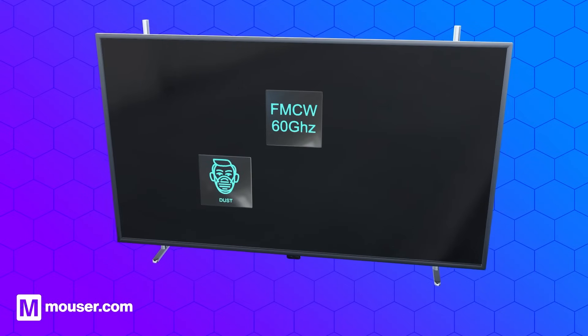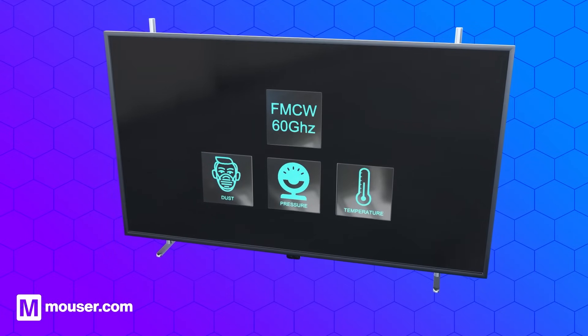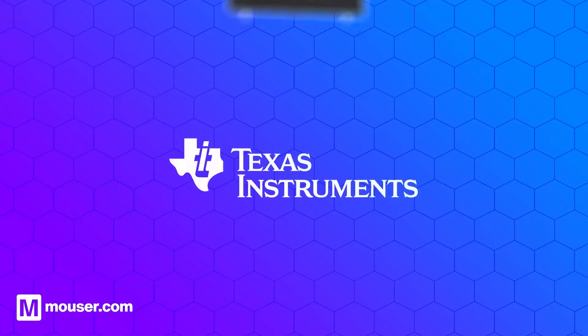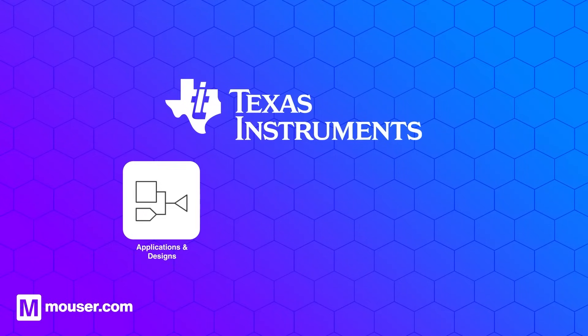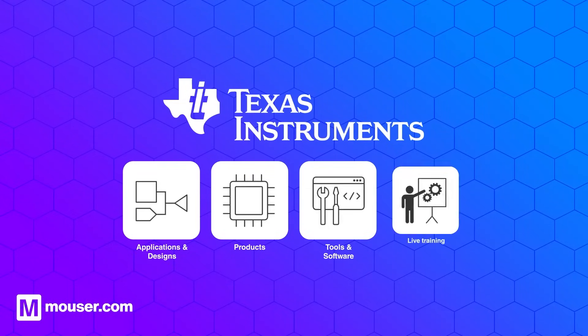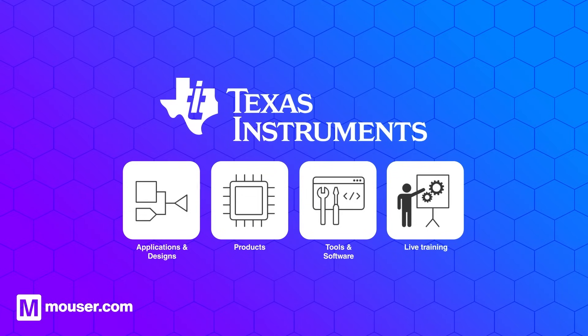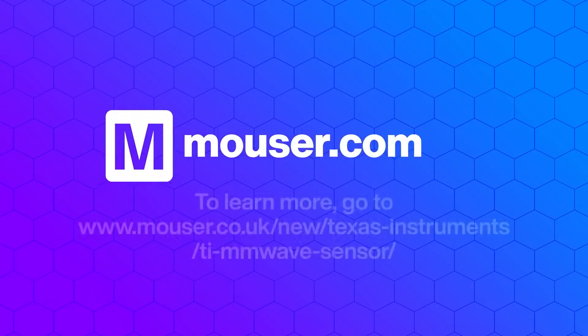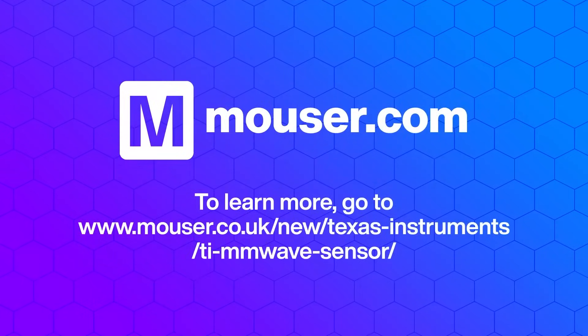Texas Instruments is a world leader in fully integrated millimeter wave sensing ICs at both 60 and 77 gigahertz, and provides everything needed to start your development. For more information, visit mouser.com.